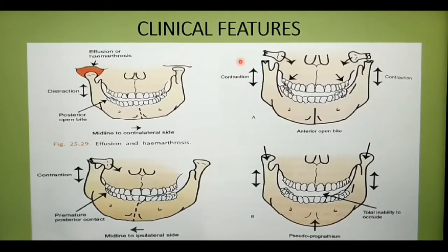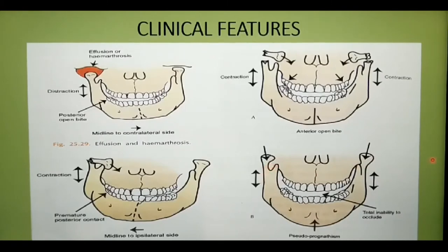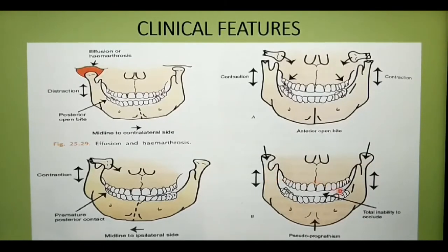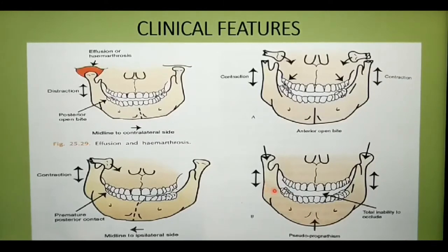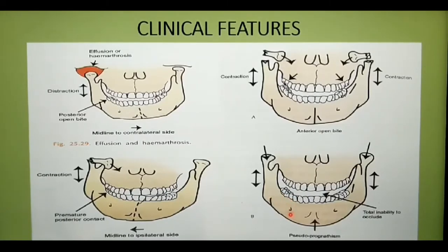This is characteristic of bilateral condylar fractures with dislocation. The fourth figure shows bilateral dislocation without fracture — the condyles are not fractured but are completely dislocated, meaning the condylar heads are out of the glenoid fossa. This produces an appearance of long face or prognathism, with almost complete inability to occlude any teeth and appearance of prognathism or pseudo-prognathism.